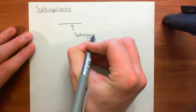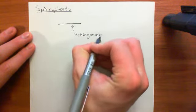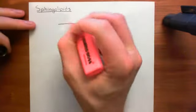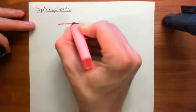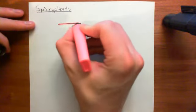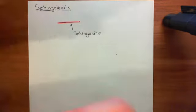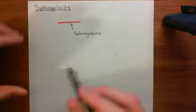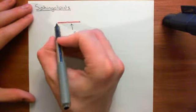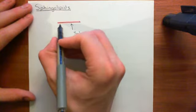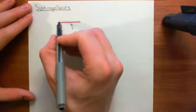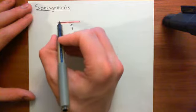Sphingosine is an 18-carbon molecule, and most of its structure is extremely hydrophobic. It has a great long tail which is completely saturated and is therefore extremely hydrophobic. However, at its head it has some more interesting groups. It has two alcohol groups at its head, and it also has an amino group.